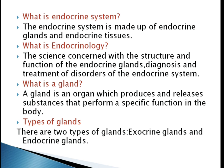What is a gland? A gland is an organ which produces and releases substances that perform a specific function in the body. There are two types of glands known as exocrine glands and endocrine glands.